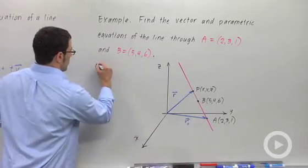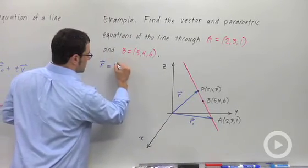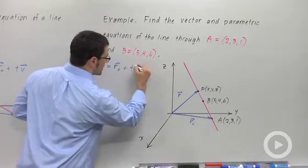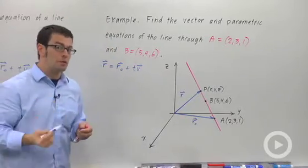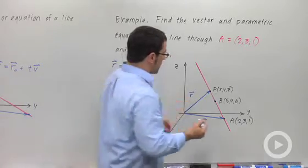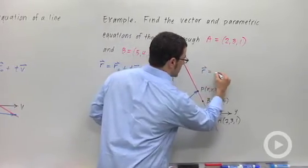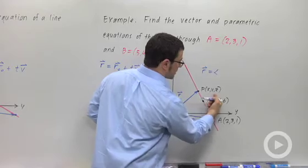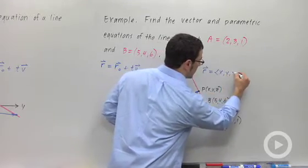Remember the equation r equals r0 plus t times v. I need to come up with the components for all of these vectors. Vector r is going to have components the same as the coordinates of this point: x, y, and z.